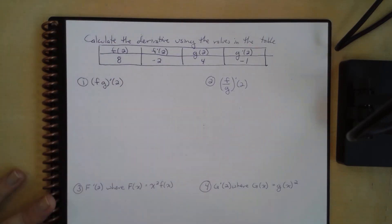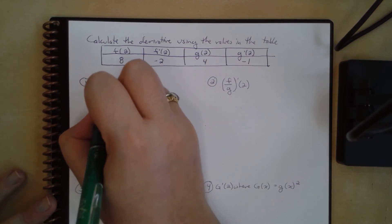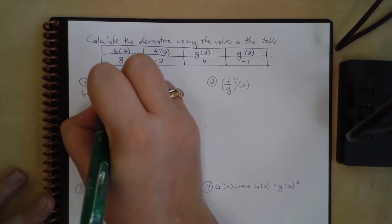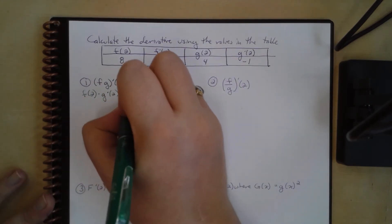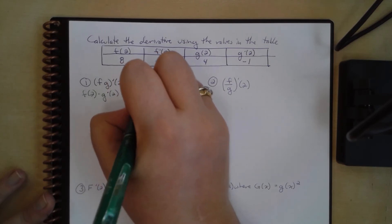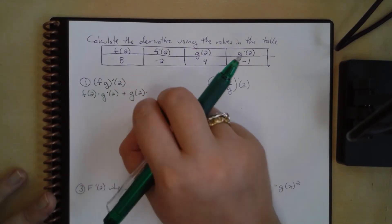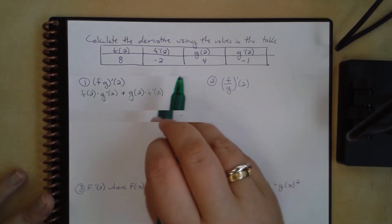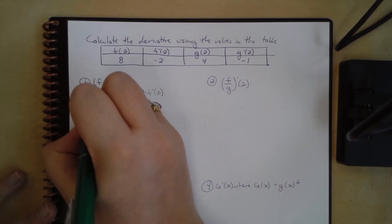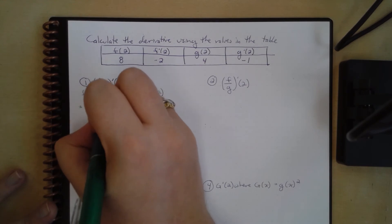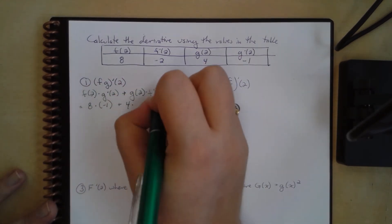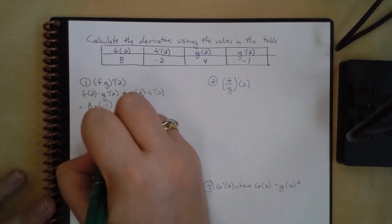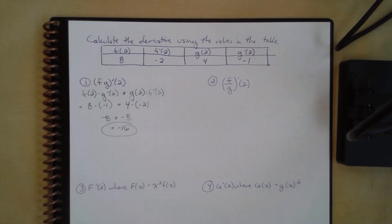This is basically the product rule: f(2) times g prime(2) plus g(2) times f prime(2). From the table, f(2) equals 8, g prime(2) equals negative 1, g(2) equals 4, and f prime(2) equals negative 2. So we get 8 times negative 1 plus 4 times negative 2, which is negative 8 plus negative 8, equals negative 16.